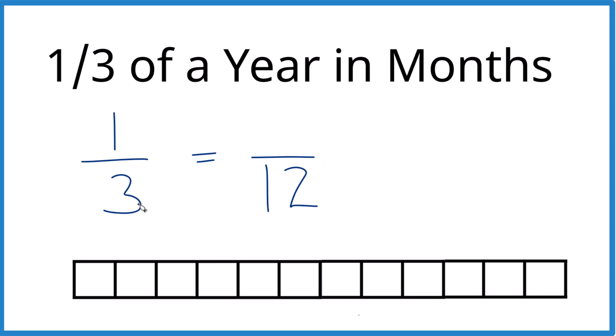So three times four would give us 12. So for this to be equivalent, three times four is 12, one times four is four. So one third and four twelfths, they're the same. But now you can see one month out of three is the same as four out of 12. So there are four months in one year.